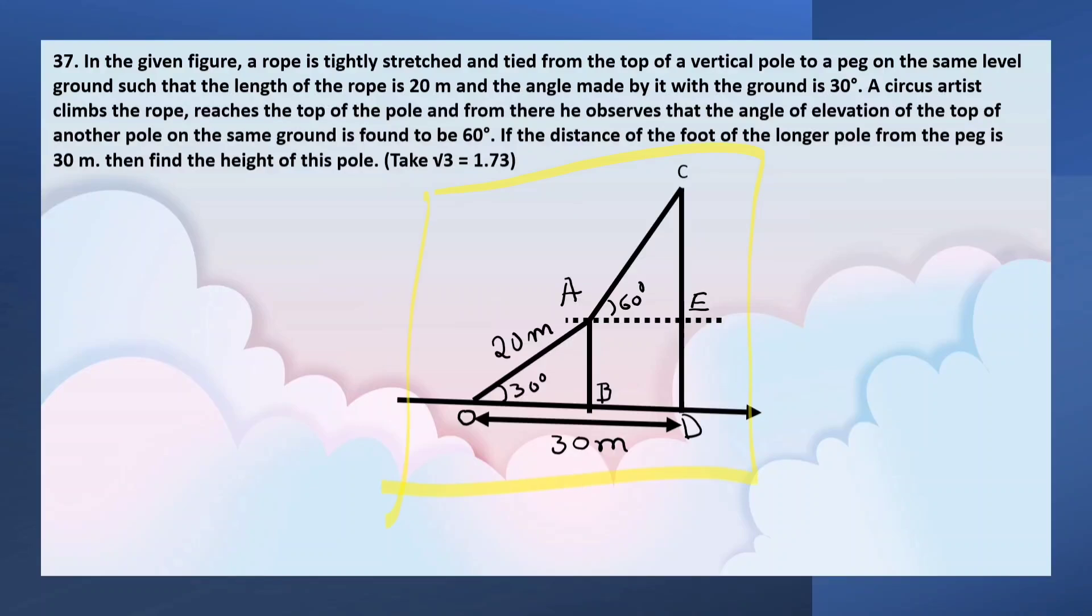In the figure, a rope is tightly stretched and tied from the top of the vertical pole to a peg on the ground. The pole is AB.